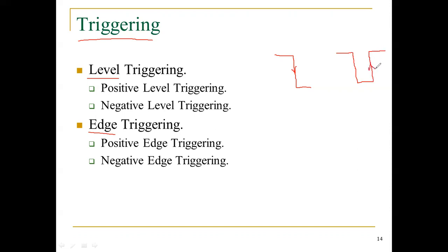If you apply a trigger pulse at one category — and another category is at the time of transition between 0 to 1 — if you are going to apply the triggering pulse at that point, and if we consider this as positive triggering, then its opposite is negative triggering. That is the meaning of positive and negative.